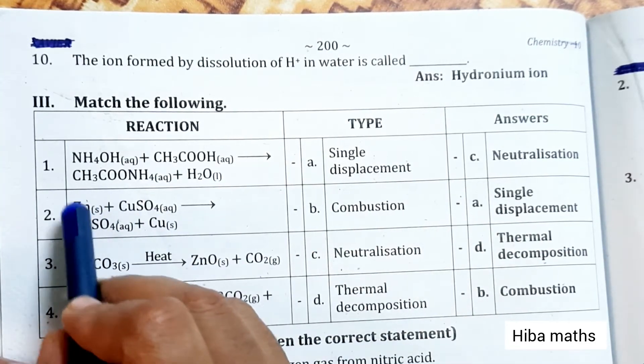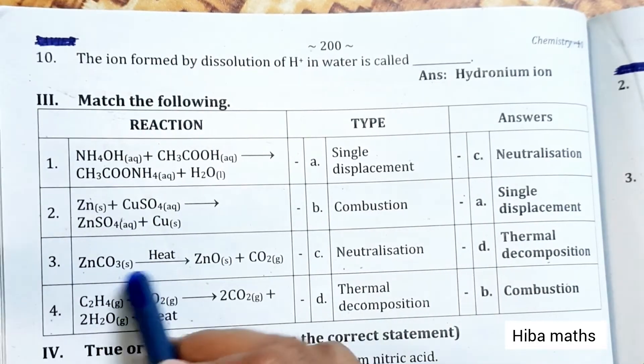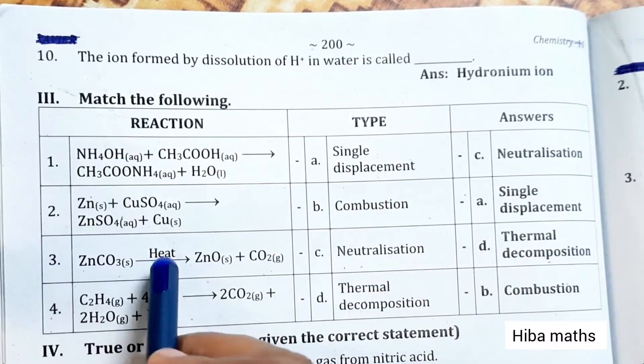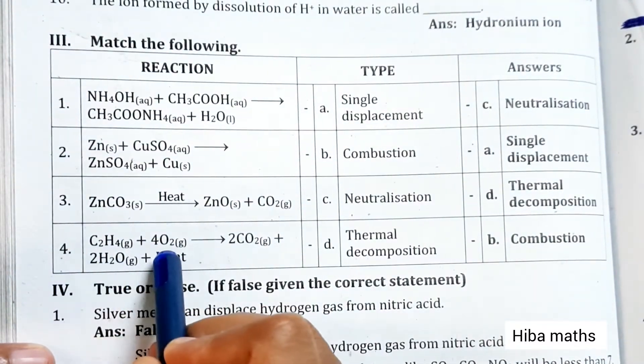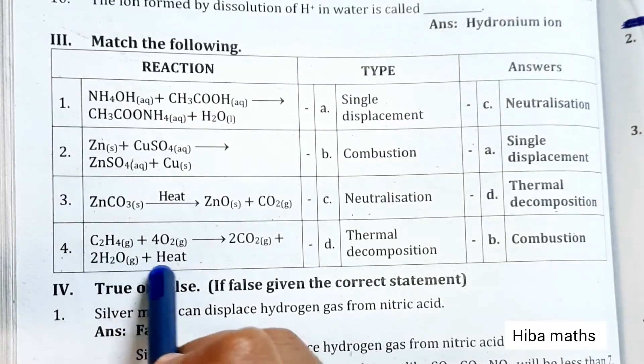ZnCO3 gives ZnO plus CO2 - thermal decomposition. C2H4 plus 4O2 gives 2CO2 plus 2H2O plus heat - combustion.